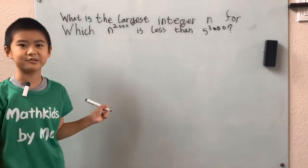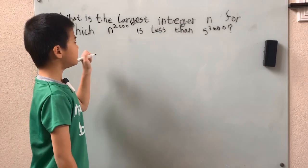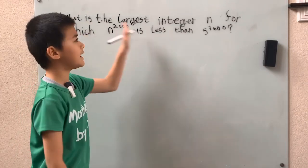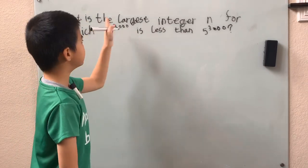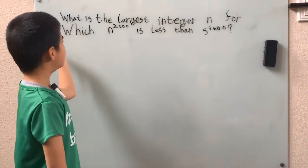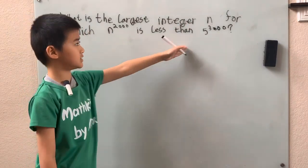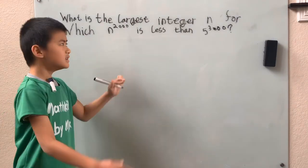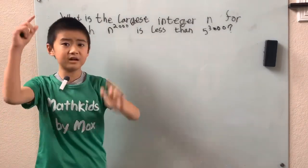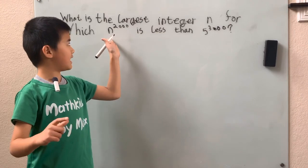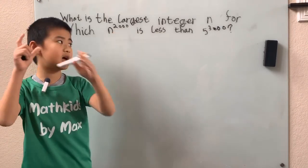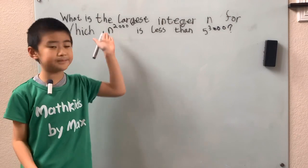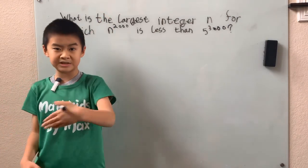We certainly don't want to do that. So now since they want us comparing, they want what is the largest integer n which n to the 2,000 is less than 5 to the 3,000. I just repeated that problem. Since they want us to compare them so that n to the 2,000 is less than 5 to the 3,000 and n has to be the greatest integer as possible.